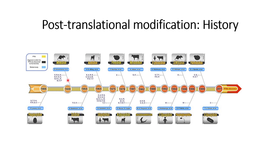I hope you have understood the chronology of the discovery of different kinds of post-translational modifications, which PTMs are important in relation to disease, and how post-translational modification information can be used to differentiate unhealthy cells from normal or healthy cells. That's all for this video — thank you for your time.